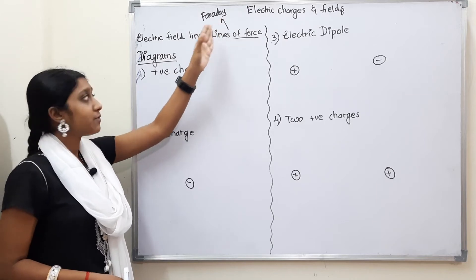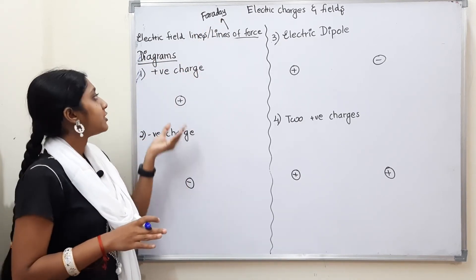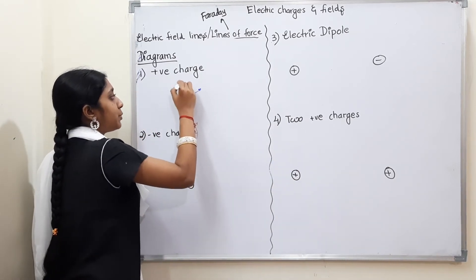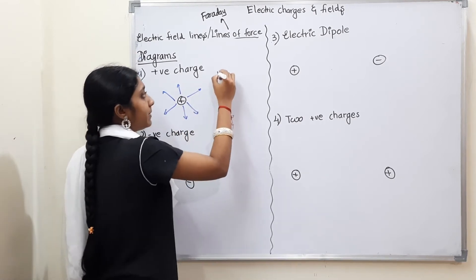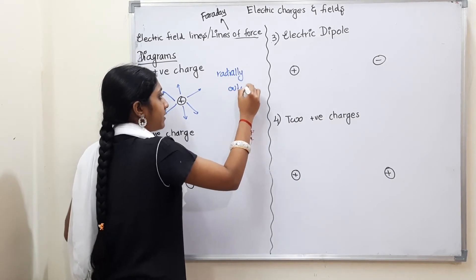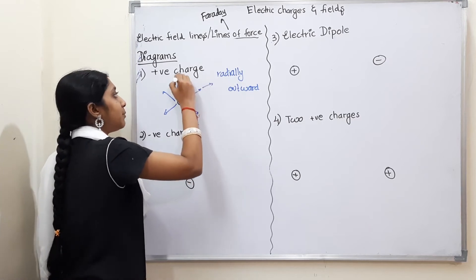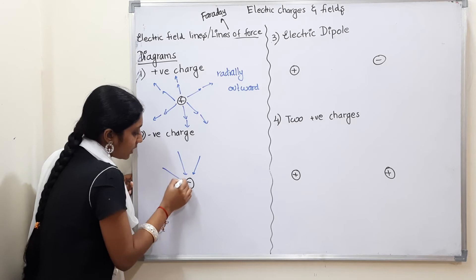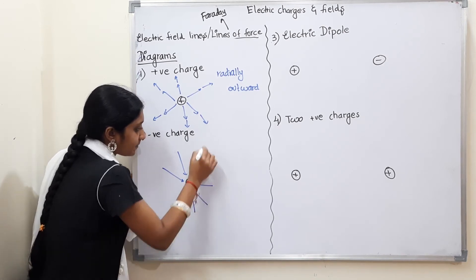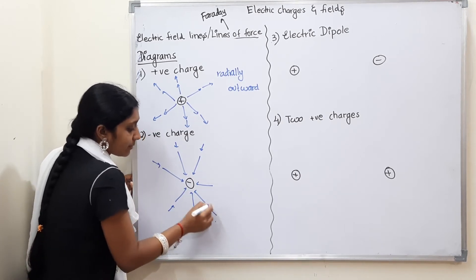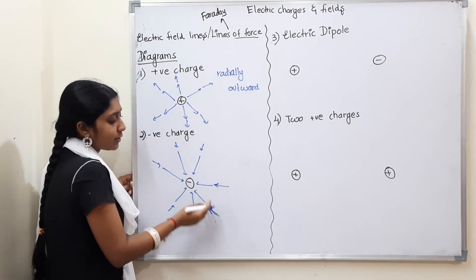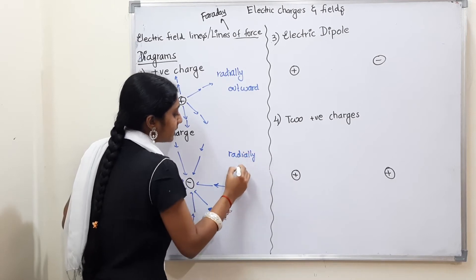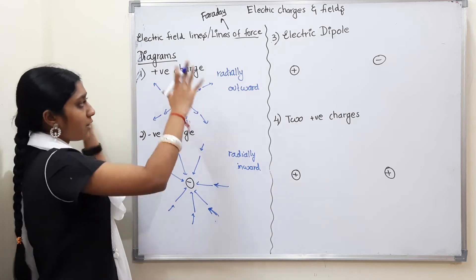Electric Field Line diagrams can be drawn for four types of charge configurations: only positive charge, only negative charge, an electric dipole, and two positive charges. For a positive charge, field lines go radially outward. For a negative charge, field lines go radially inward. Positive charge is outward and negative charge is inward.